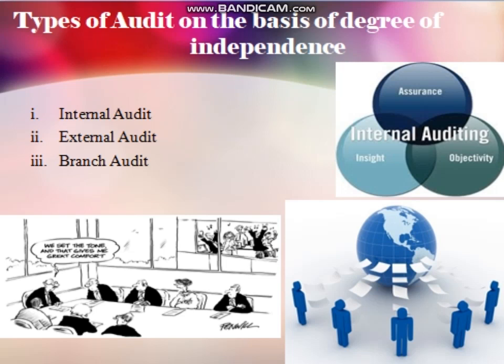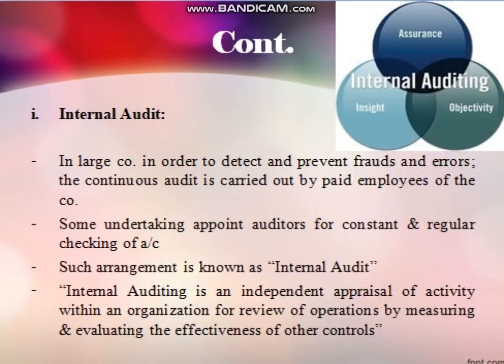Let us see in detail what is internal audit, external audit, and branch audit. In large companies, in order to detect and prevent errors and frauds, a continuous audit is carried out by a paid employee of the company. Some undertakings appoint auditors for constant and regular checking of accounts — such arrangement is known as internal auditing. An employee is appointed by the company to find out, prevent, and detect the errors and frauds in the books of accounts.